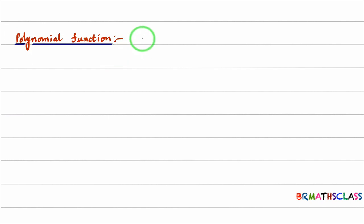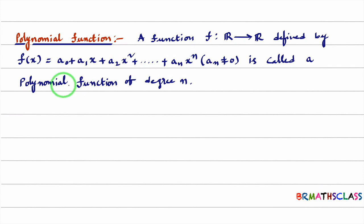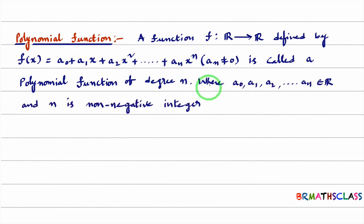What is a polynomial function? It is a function from real numbers to real numbers, defined as f(x) = a0 + a1·x + a2·x² + ... + an·xⁿ. Here a0, a1, a2, ..., an are real numbers. If an is not equal to 0, then it is called a polynomial function of degree n. And n is a non-negative integer.